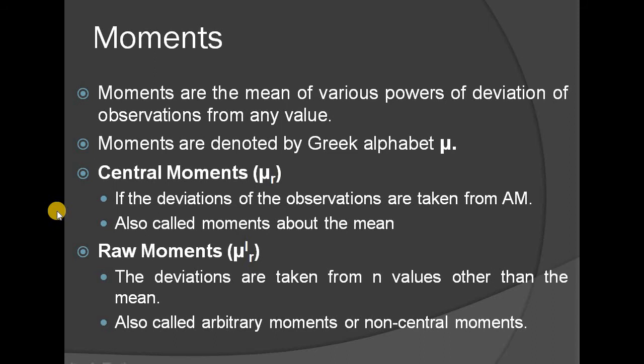Moments are denoted in the Greek alphabet as mu. There are two types of moments: central moments and raw moments. Central moments are denoted as mu_r and raw moments are denoted as mu_r'.